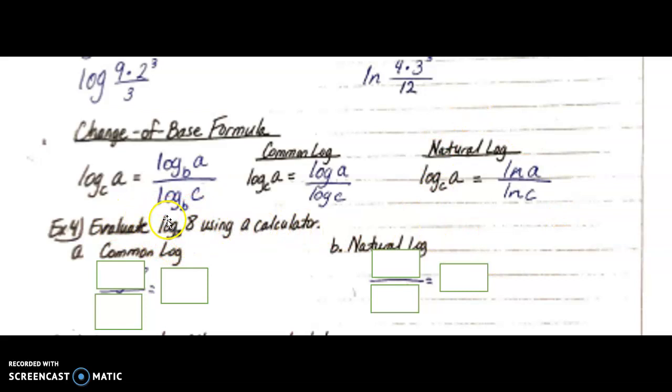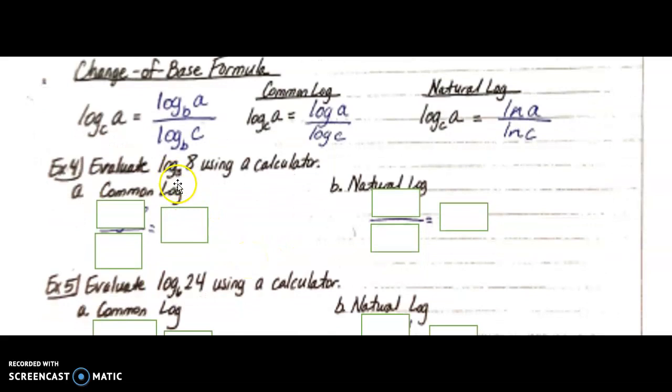So this is really cool now that we can actually evaluate things like log base 3 of 8 using a calculator. So if I use common log, that's my base of 10, log base 3 of 8 becomes log base 10 of 8 over log base 10 of 3. And I just plug that fraction into my calculator, and I get the value of 1.89.